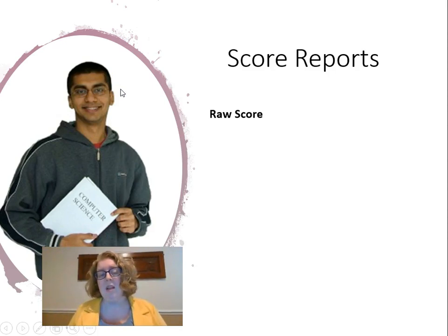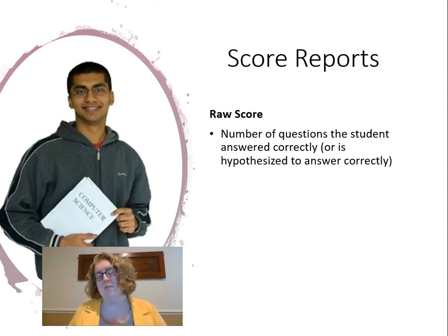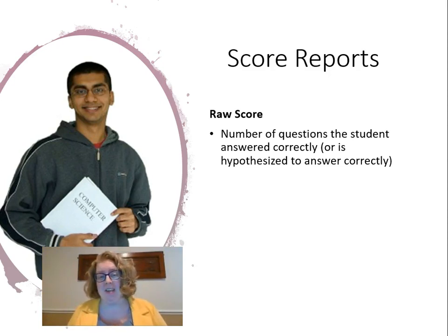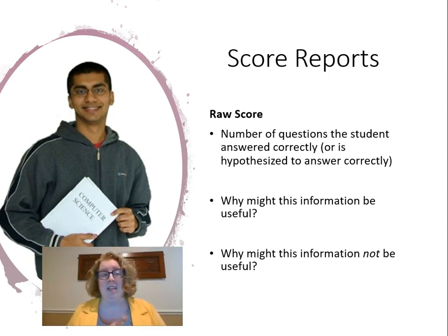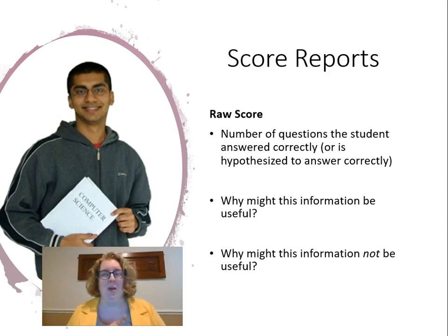You have a raw score, and remember that you can't interpret a raw score. That's the number of questions the student answered correctly, or is hypothesized to answer correctly if you're using something like IRT — like on the iReady or the GRE, those smart adaptive tests. The raw score really isn't useful at all. Psychometricians use those raw scores along with the student's age and grade level to come up with derived scores.